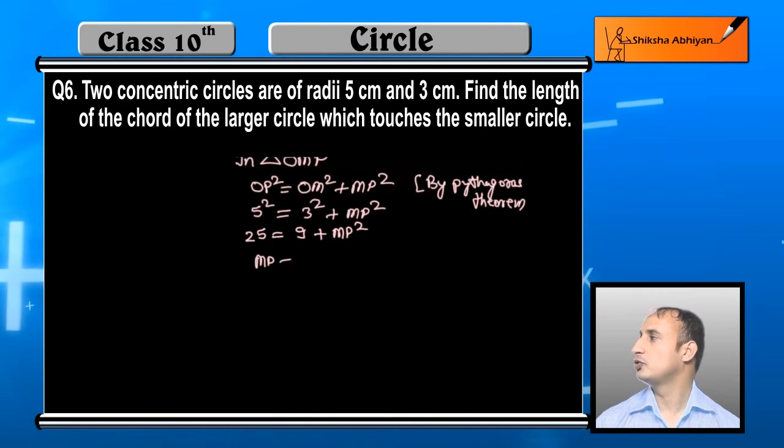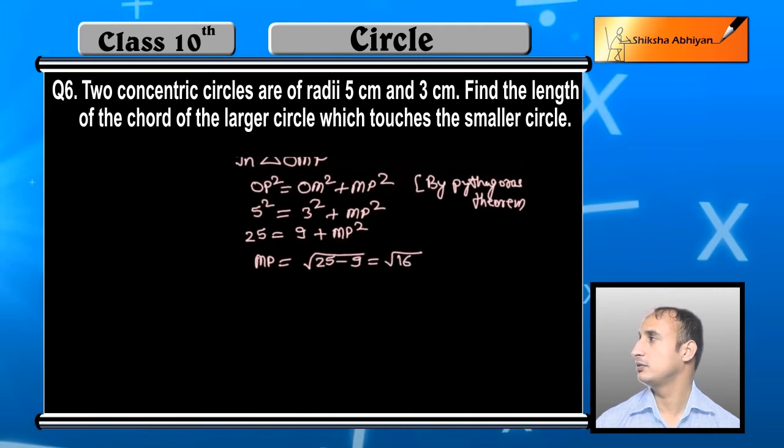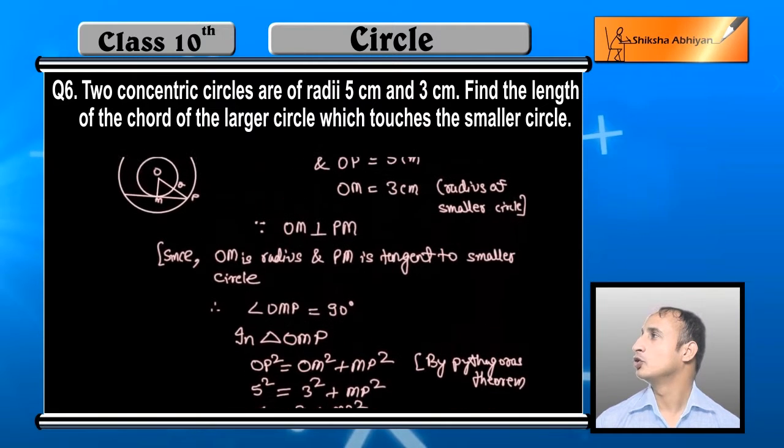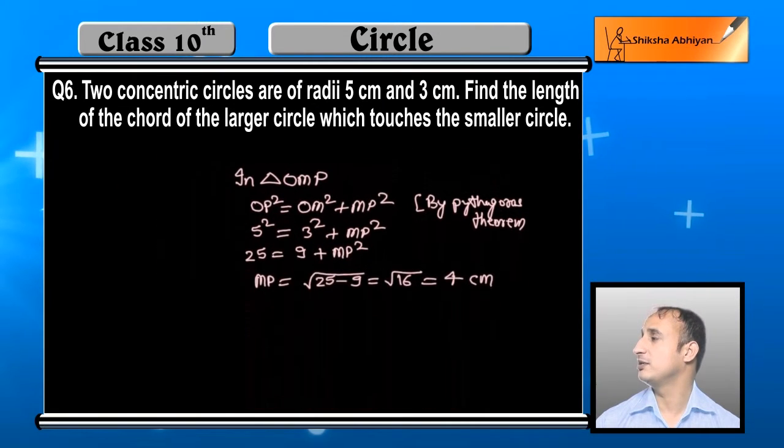So MP square is equal to 25 minus 9. Taking square root, MP equals square root of 16, which is 4 cm. So MP is 4 cm.